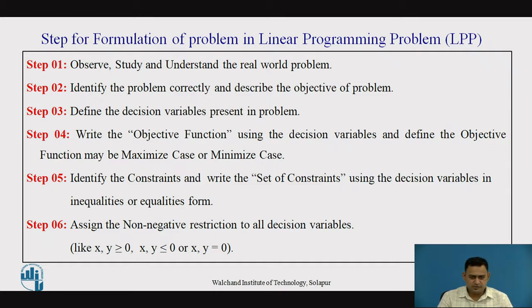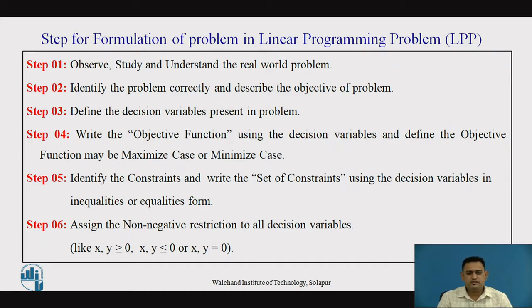Next comes identifying the decision variables present in the problem. These are the particular terms which are helpful to define the problem in quantitative manners. After finalizing the decision variables, we have to assign the restrictions to them in accordance with the sign — the variables are always called non-negative variables. Then we define the objective function equation using the decision variables. This objective function may be a maximized case or a minimized case.